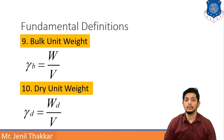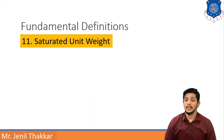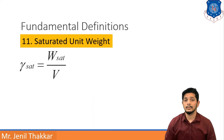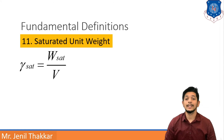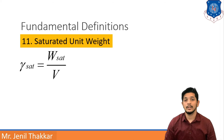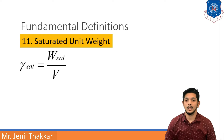The next definition is Saturated Unit Weight, denoted as gamma sat. Gamma sat equals Wsat upon capital V, where Wsat means weight of the saturated soil mass and V means total volume. Hence, it is defined as the ratio of the weight of saturated soil mass to the total volume of soil mass.